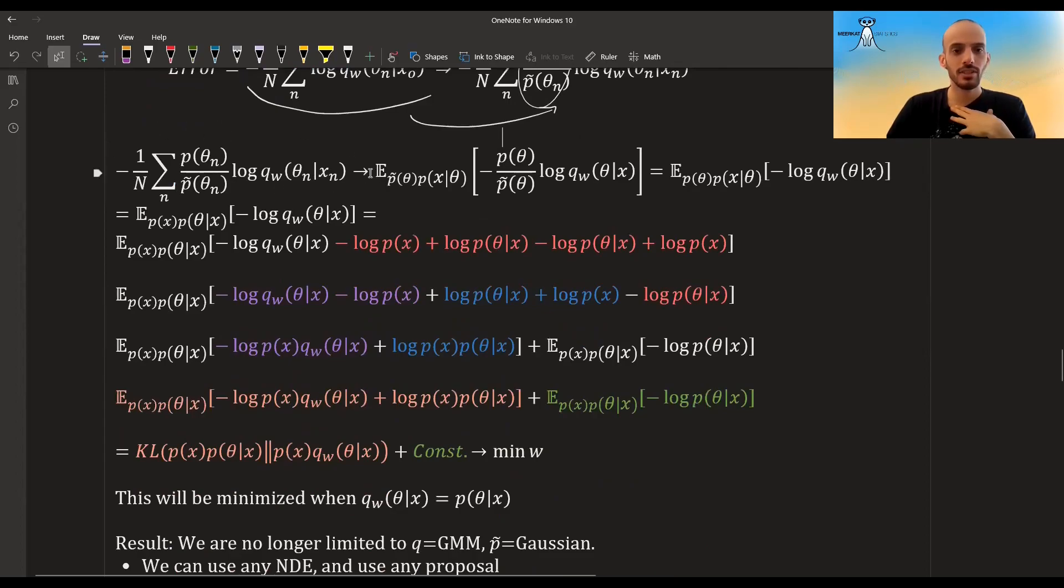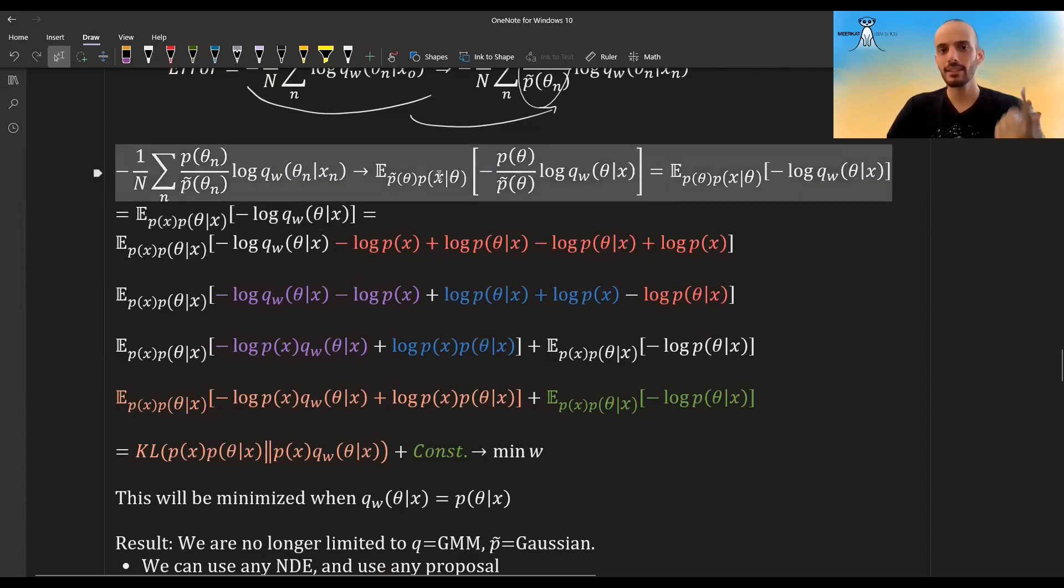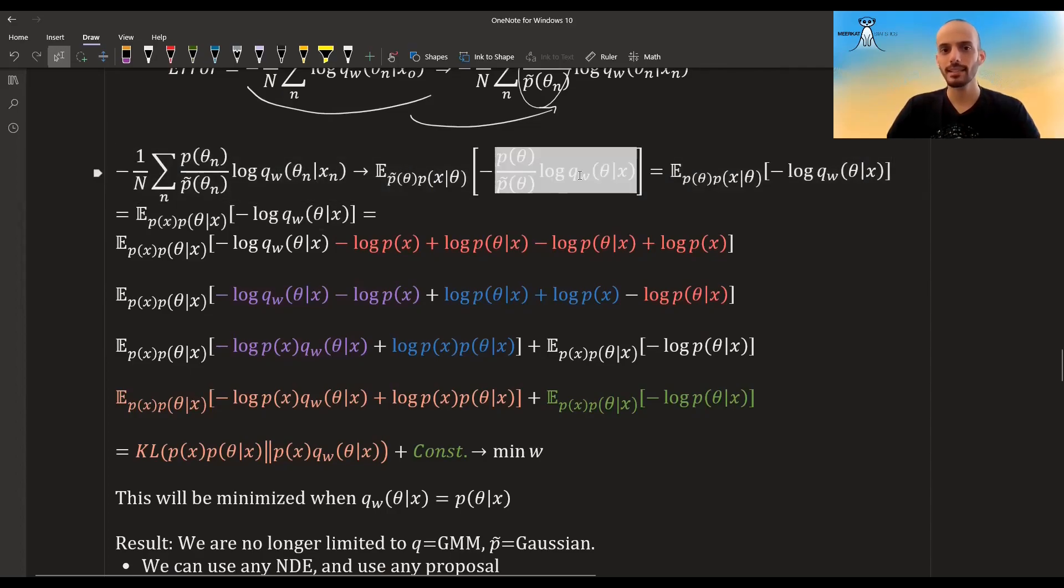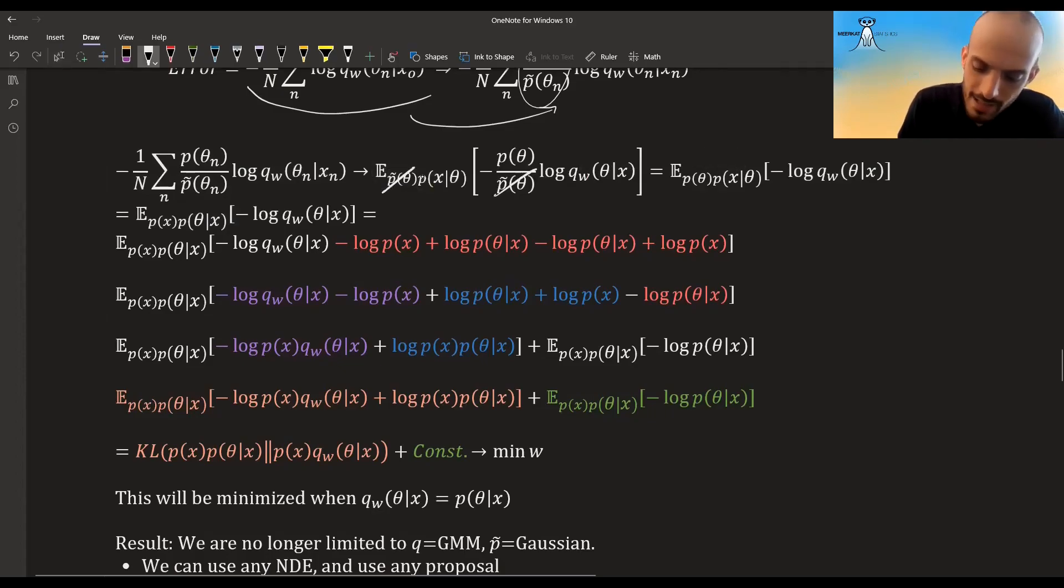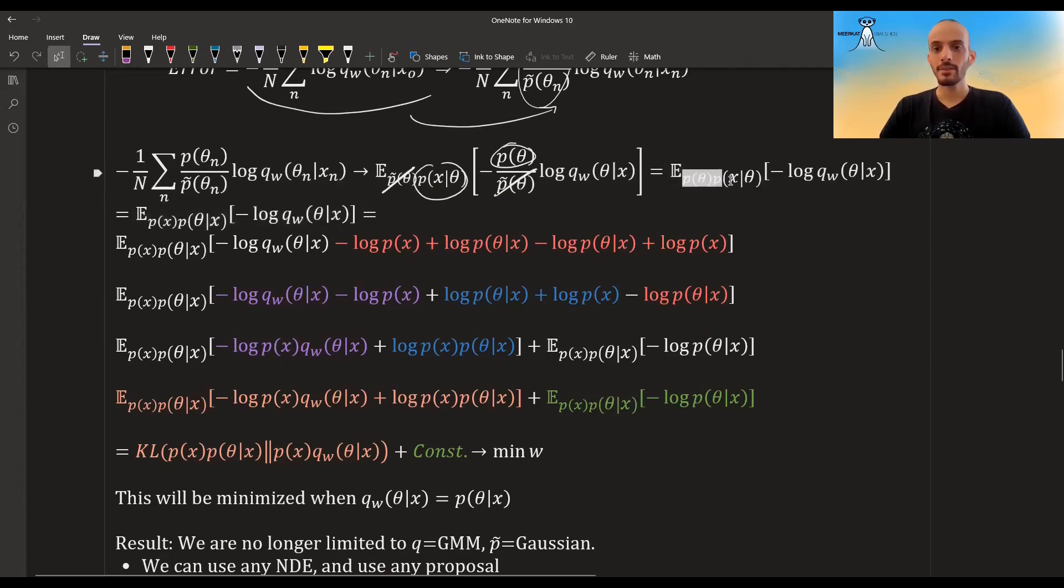Let's see how the math behind this works. Well, this term over here is just an approximation—if you take n to infinity—of the expectation of this term when you draw from the proposal prior and you simulate it from those thetas that you took. Now if we develop this and we write the integral, we will have to multiply this by this, and so this and this will cancel.